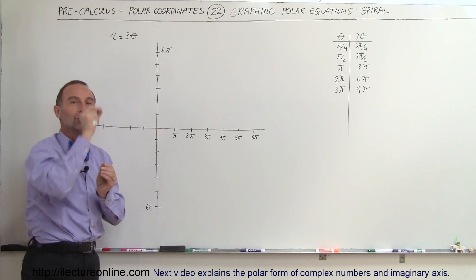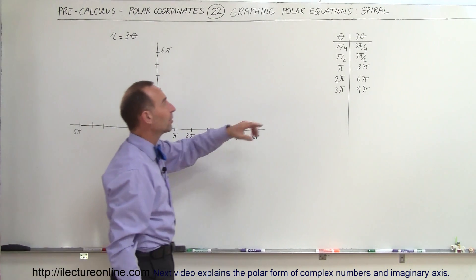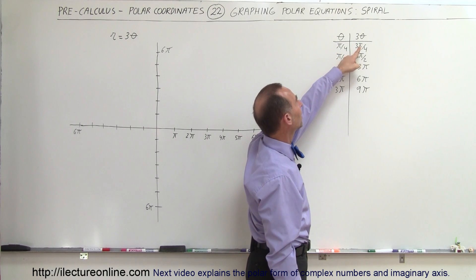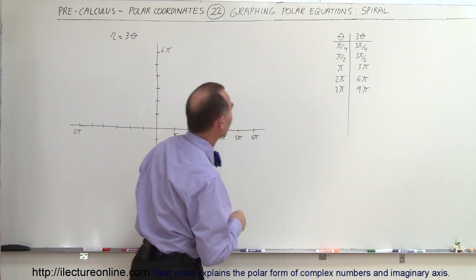So let's say that we have a table right here of values. Let's say that theta is equal to π over 4. That means 3 theta is 3π over 4, so then the length of that would be 3 quarters of a π.